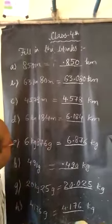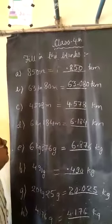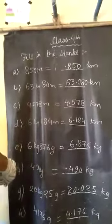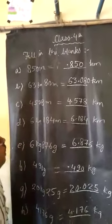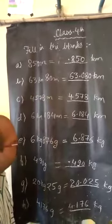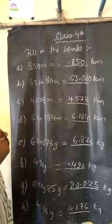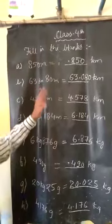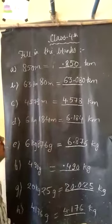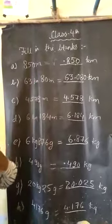Here, the question is 63 kilometers 80 meters. This question, our answer is in kilometers. So, we change meters into kilometers. If the answer is in meters, we change the kilometers into meters. But here, we change the meters into kilometers, because already 63 kilometers is given. So, we change 80 meters.